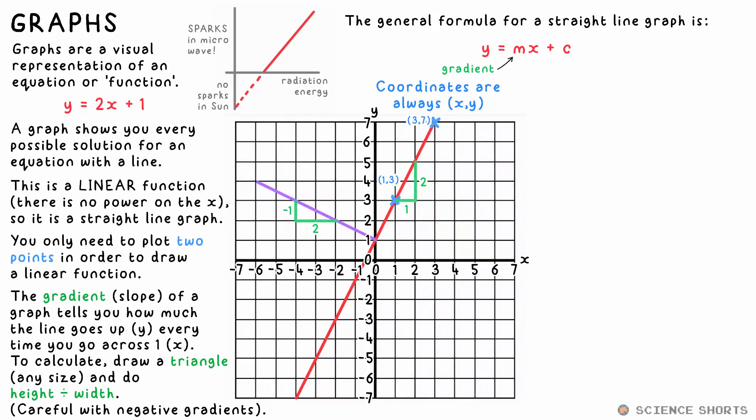Be careful though. If the gradient isn't positive, the line will go down as you go to the right. Technically, in this case, the height of the triangle should be negative to give us that negative value for the gradient.